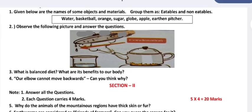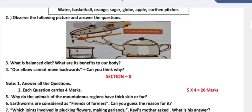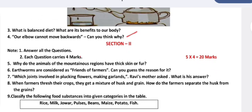Observe the following picture and answer the questions: What is balanced diet? What are its benefits to our body? Our elbow cannot move backwards, can you think why? Section 2: Answer all the questions. Each question carries 4 marks, so 5 into 4 is equal to 20 marks.